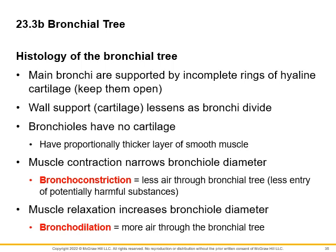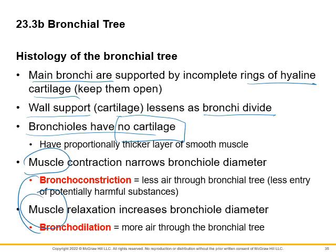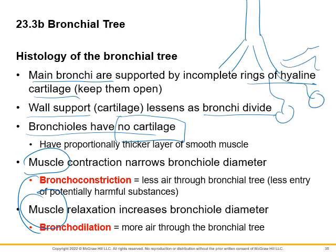In the bronchial tree, the main bronchi have rings of hyaline cartilage to keep them open — wall support. Bronchioles have no cartilage but have muscle instead. The trachea has cartilage, the bronchi have cartilage, but once we get to the ends — the bronchioles — there's no cartilage, just muscle.